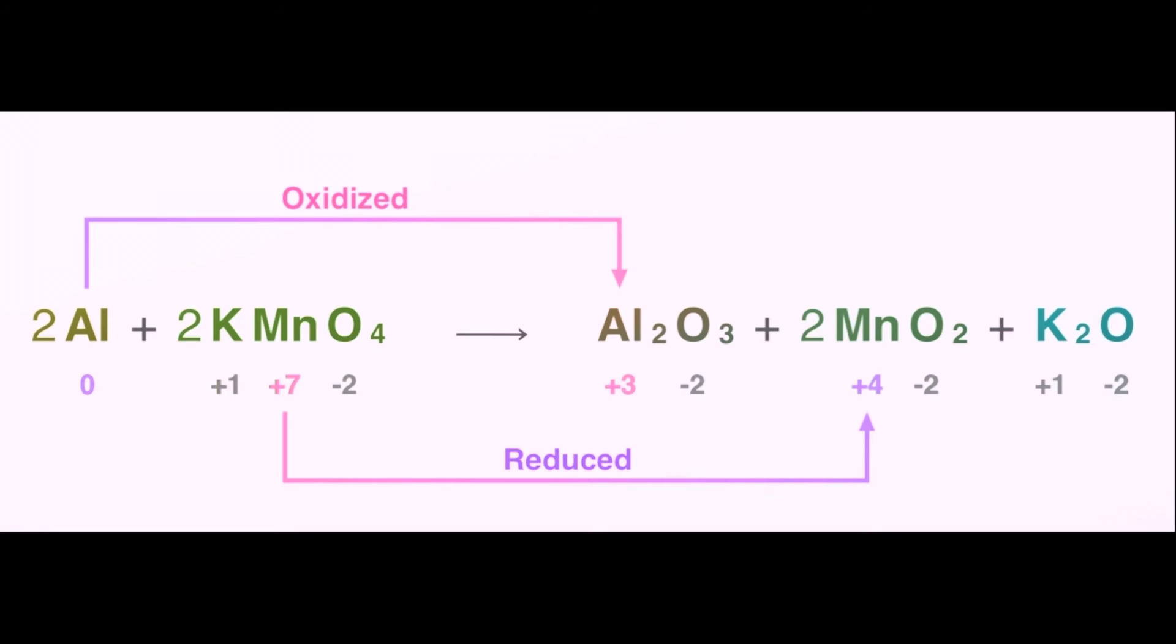And it's also a reduction reaction because the manganese ion in potassium permanganate is changing from a plus seven to a plus four as it gains three electrons in this amazing flash powder reaction.